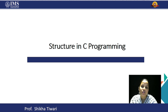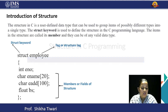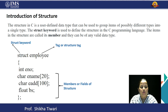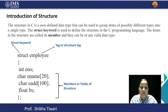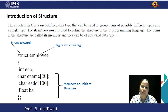Structure is just the opposite of array. In structure, what we can do is we can group different types of data together. In array, you can store all the data — if you have float kind of data, then all the float kind of data were present.